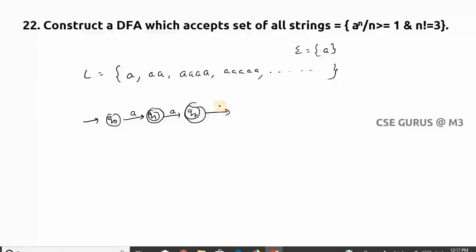But I will not put q3 as final state. It will be a non-final state. Why? Because if it is three a's, it should not go to final state. So it is given n≠3.